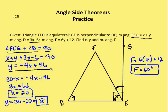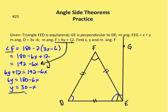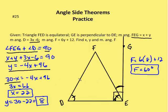Now I have two equations for Y: Y equals 30 minus X, and Y equals negative 4X plus 96. Setting them equal: 30 minus X equals negative 4X plus 96, so 3X equals 66, giving X equals 22. Then Y equals 30 minus 22, so Y equals 8. Since angle F equals 6Y plus 12, angle F equals 6 times 8 plus 12, which is 48 plus 12. So the measure of angle F equals 60 degrees.